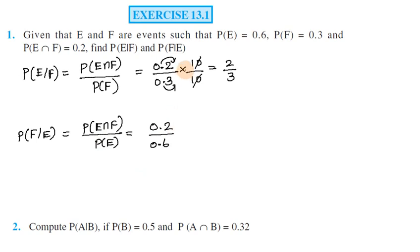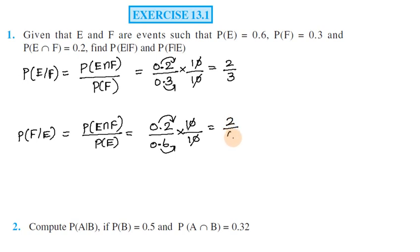To simplify, we multiply and divide by 10 to remove the decimals, giving 2 divided by 6. Cancelling, this simplifies to 1/3. So P(F|E) = 1/3. This completes the first problem.